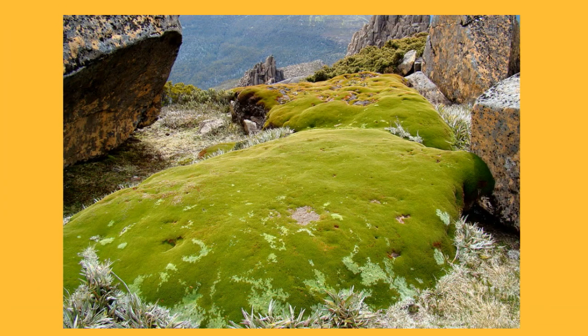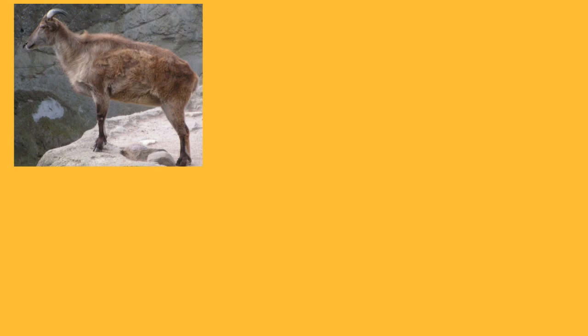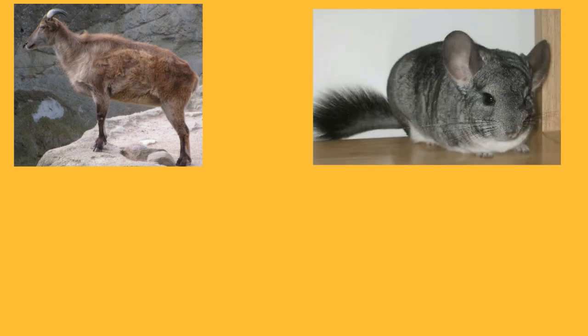The vegetation of the alpine tundra includes grasses and low-lying shrubs. Because the alpine tundra is located in various separated regions on earth, there are no animal species common to all areas of the alpine tundra. However, some animals of the alpine tundra include the mountain goat, chinchilla, and yak.